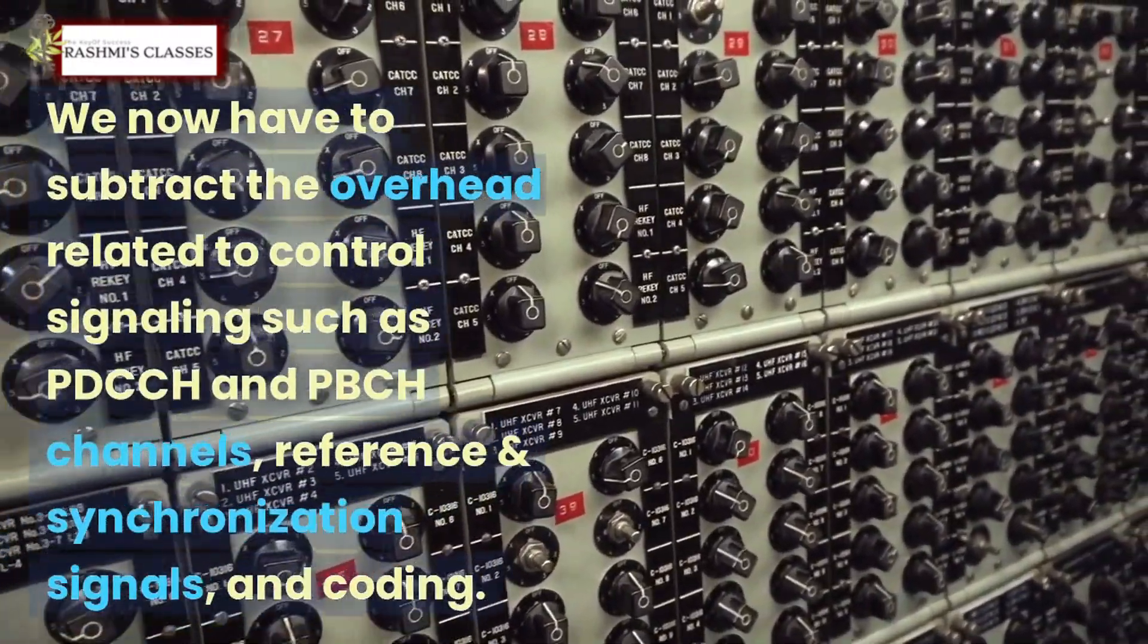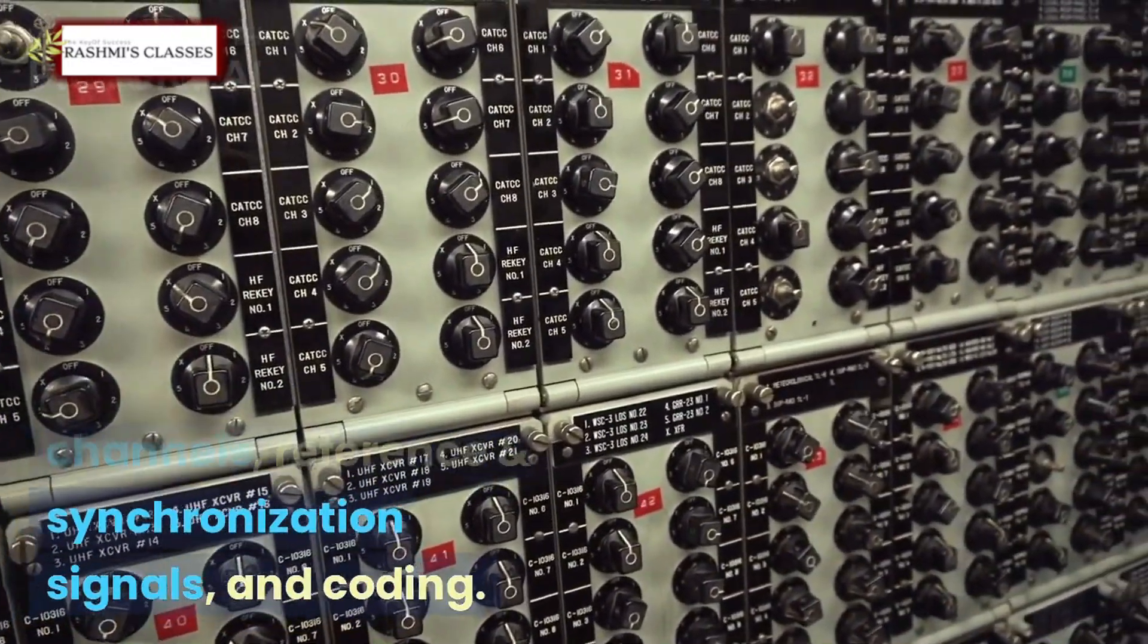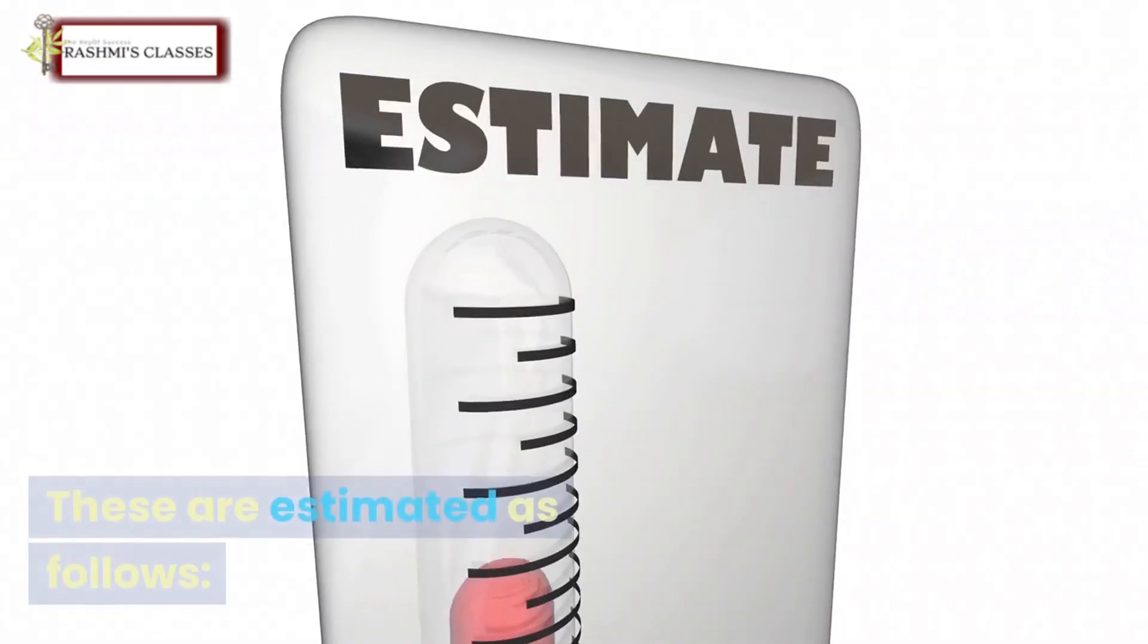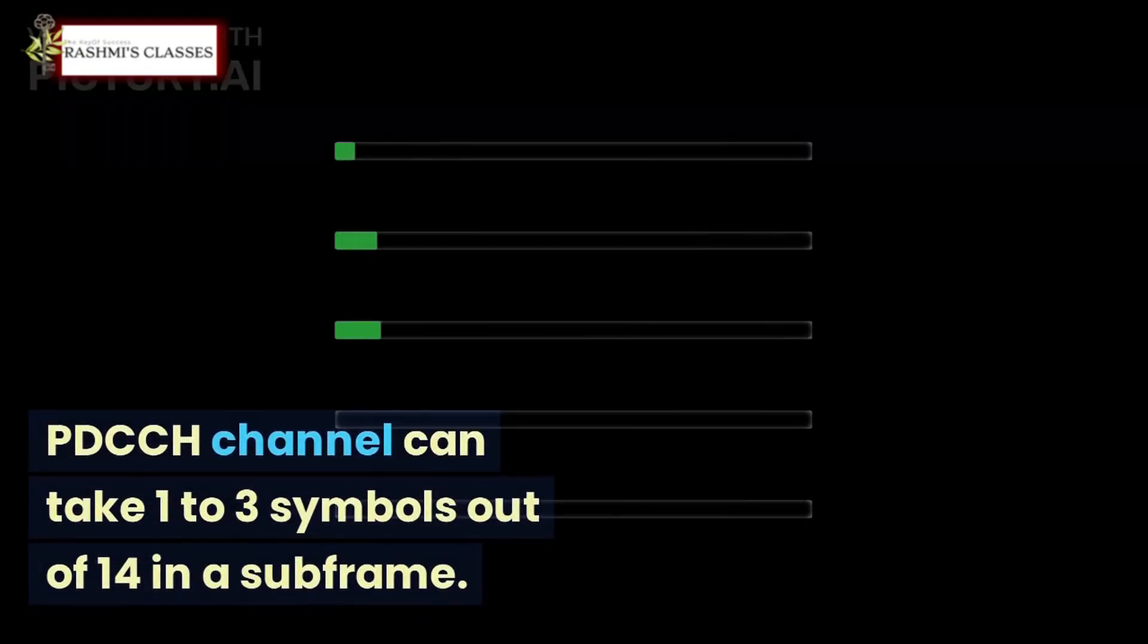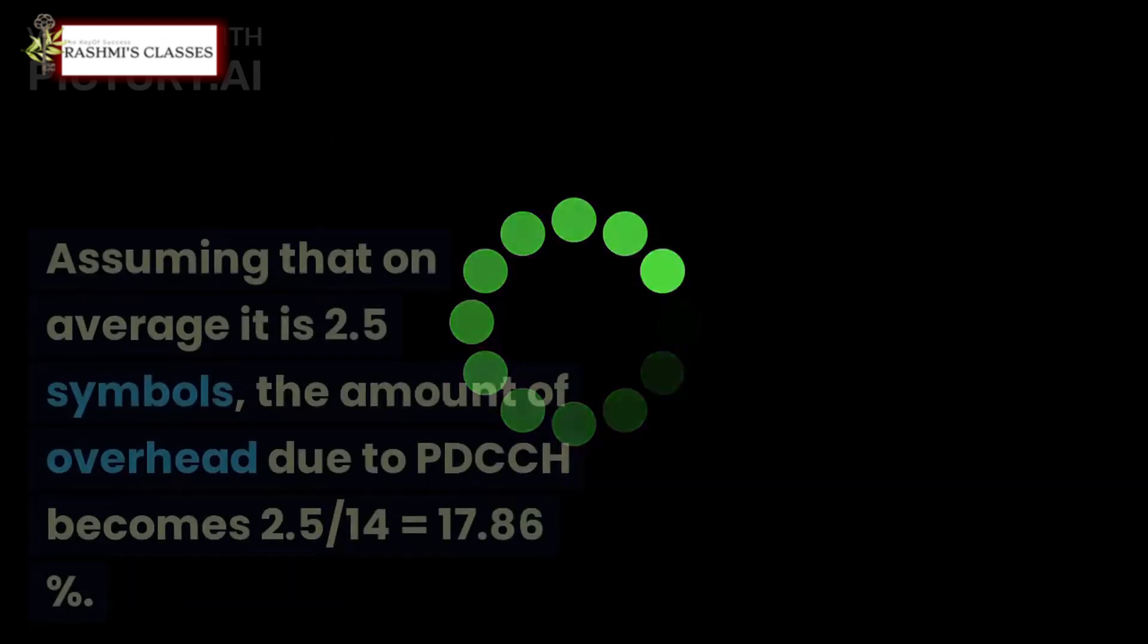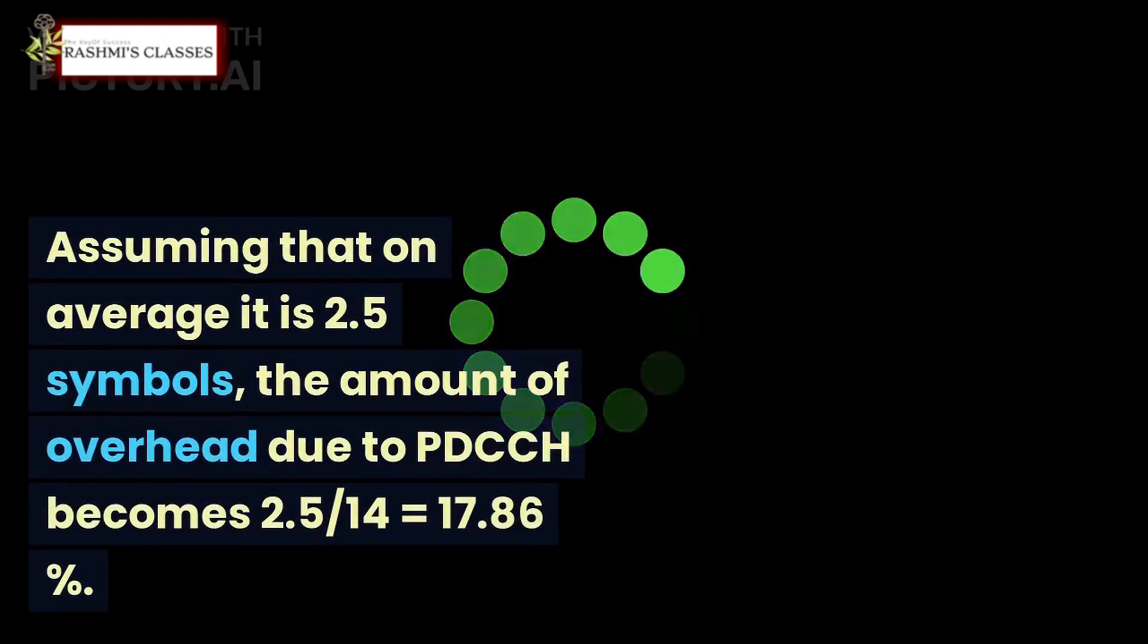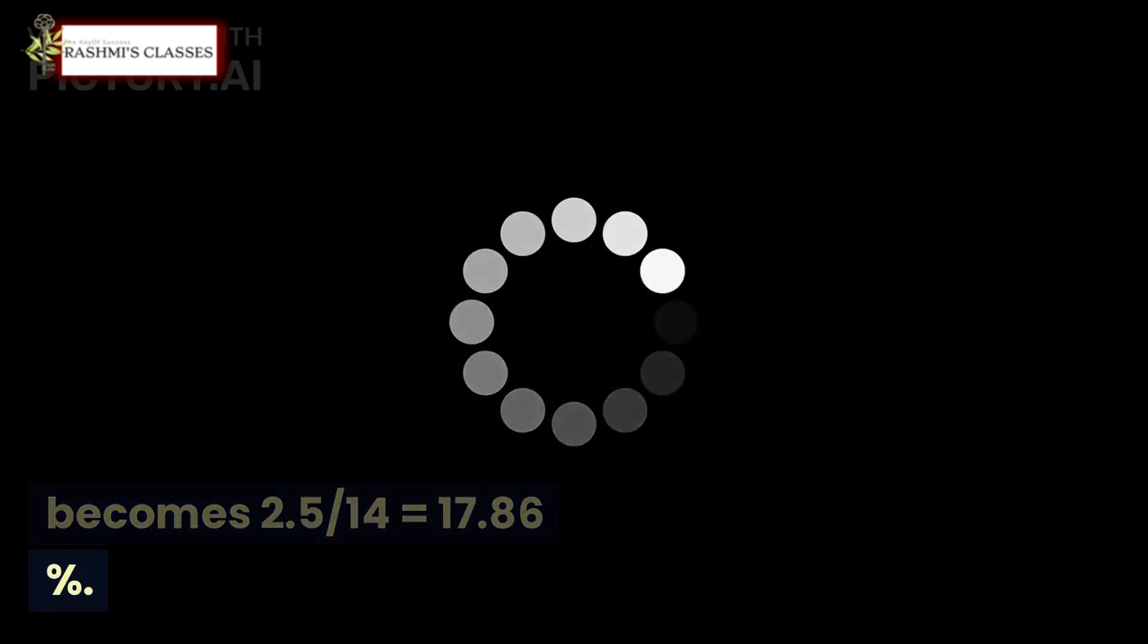We now have to subtract the overhead related to control signaling such as PDCCH and PBCH channels, reference and synchronization signals, and coding. These are estimated as follows: PBCCH channel can take 1 to 3 symbols out of 14 in a subframe. Assuming that on average it is 2.5 symbols, the amount of overhead due to PDCCH becomes 2.5/14 = 17.86%.